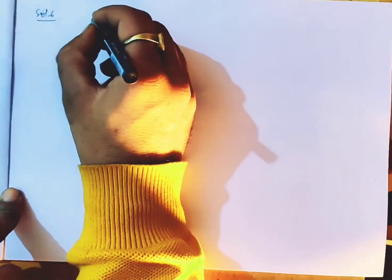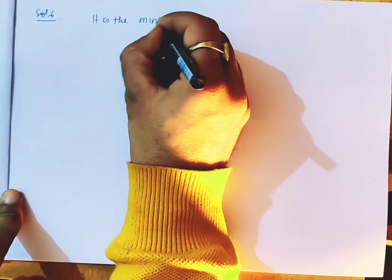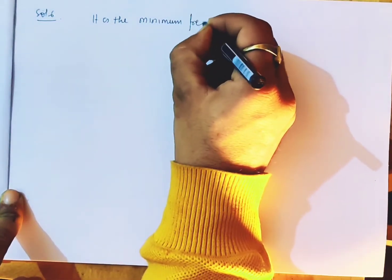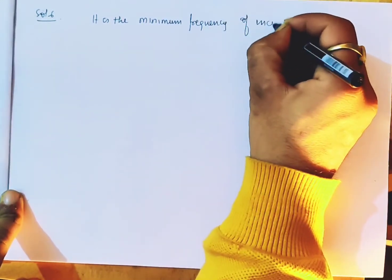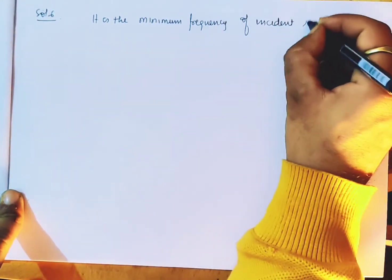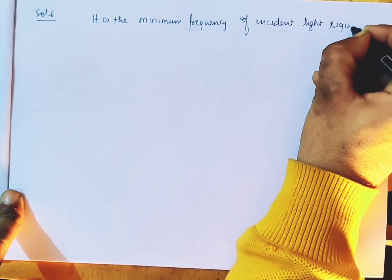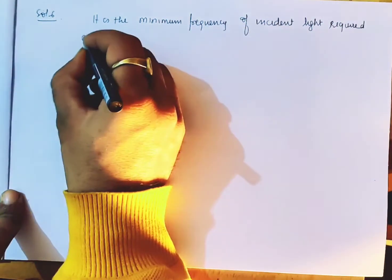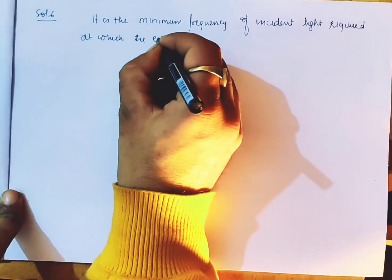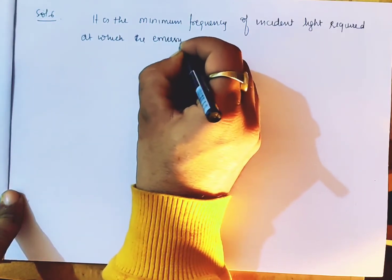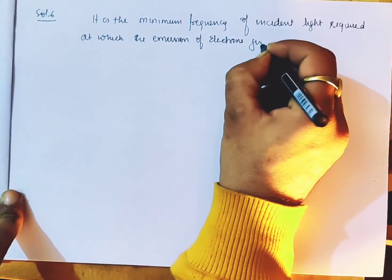Solution six. It is the minimum frequency of incident radiation required — incident light required — at which the emission of electrons just begins.